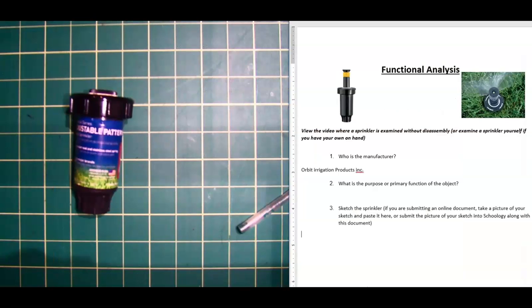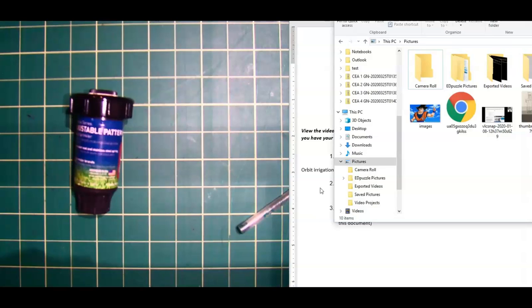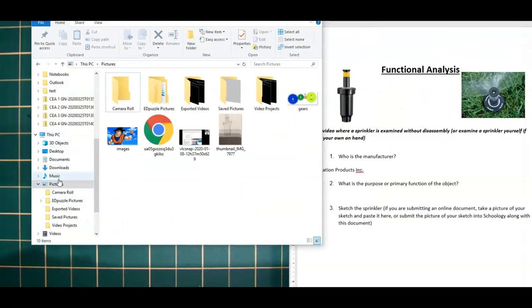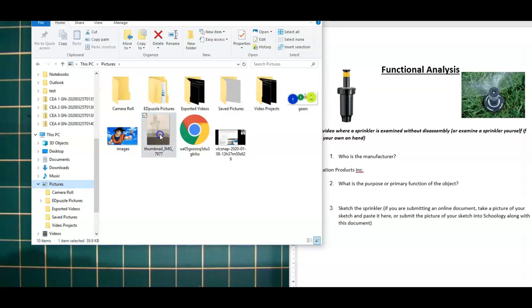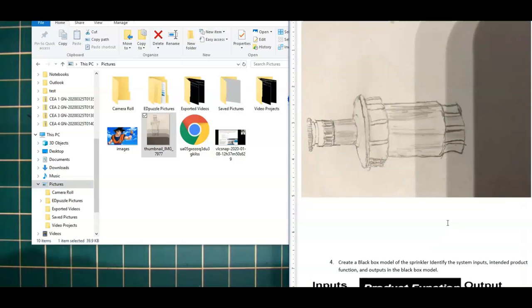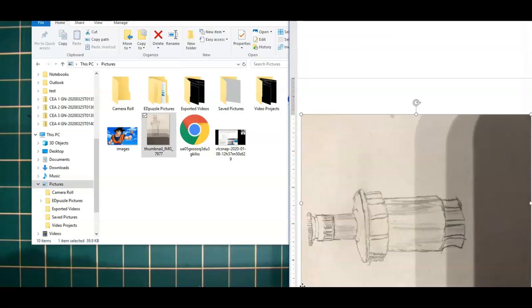And then once I have it on there, what I can do is I can actually open up that file, find it in my computer under pictures or wherever I saved. You could save it to your desktop, wherever you want. And then I can just drag the file right into the Word document. And if you look, there it is. And it's pretty big. So we can make it smaller.